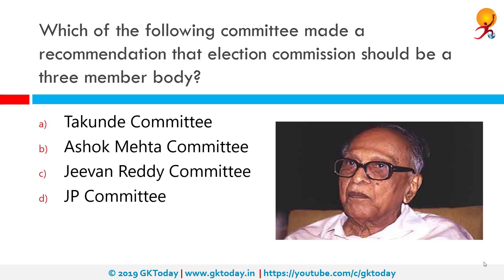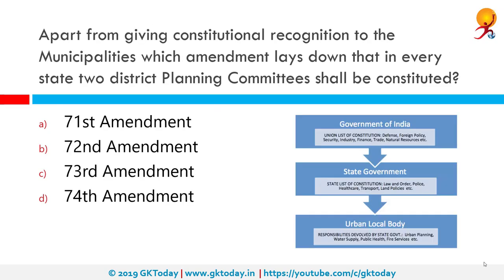Which of the following committees made a recommendation that the election commission should be a three-member body? The correct answer is the Tarkunde Committee. Jayaprakash Narayan, on behalf of the Citizens for Democracy, appointed a committee to study and report on a scheme of electoral reforms in 1974. Members of the committee included V.M. Tarkunde and M. Masani, and it is known as either the J.P. Committee or the Tarkunde Committee.